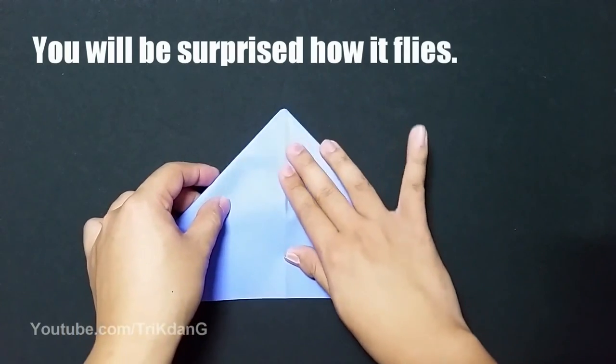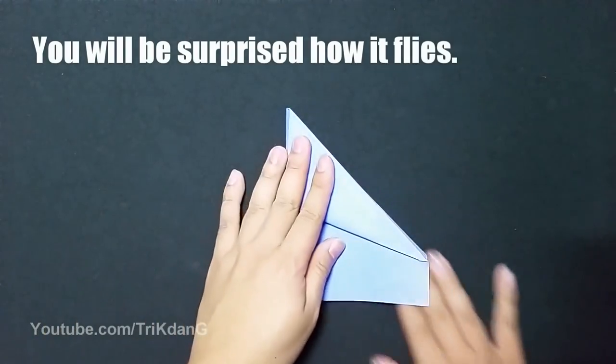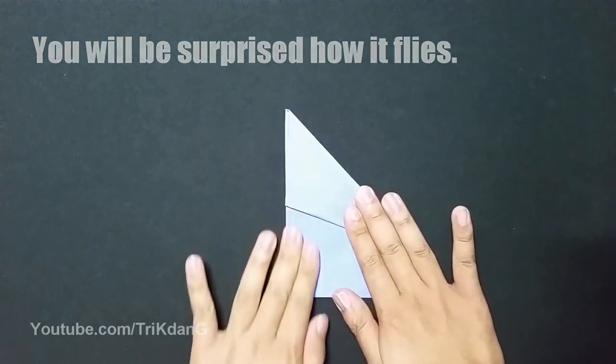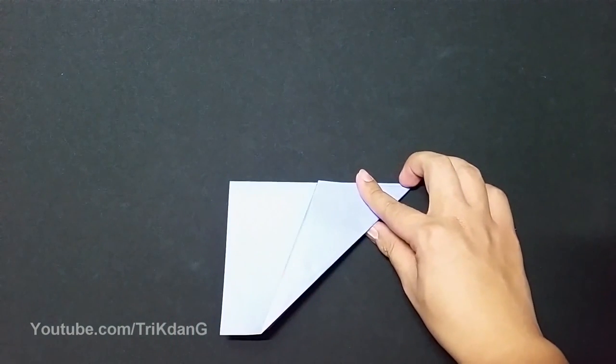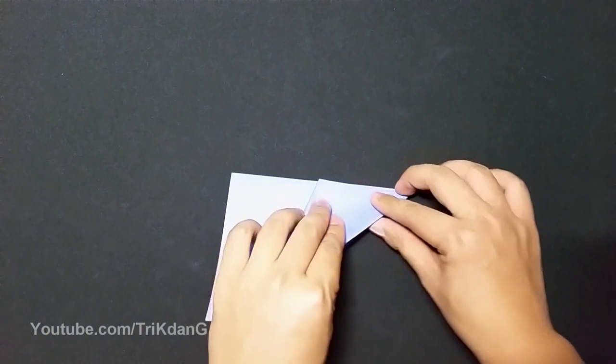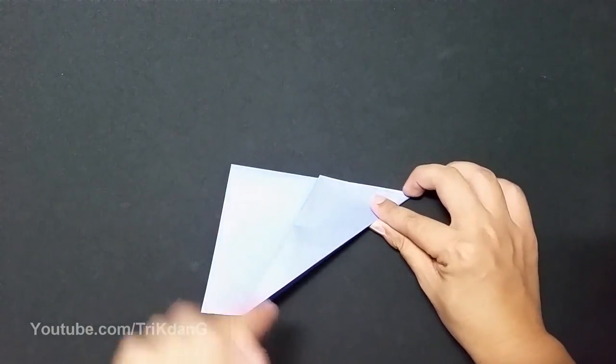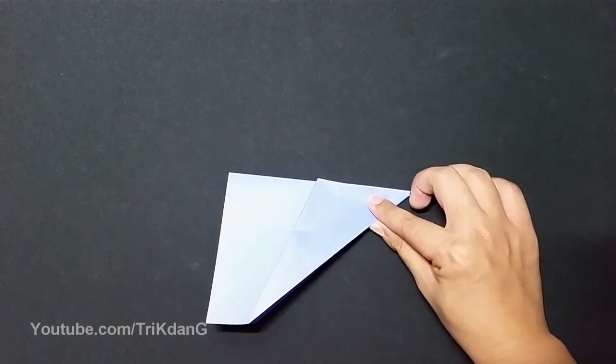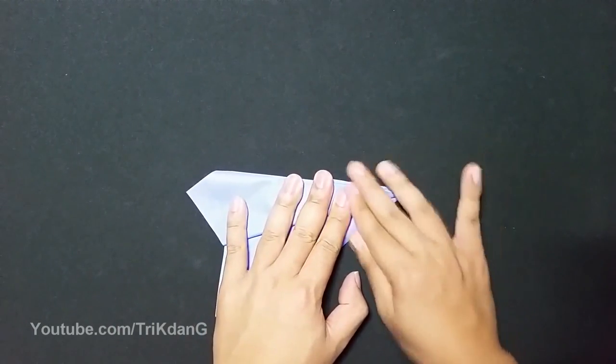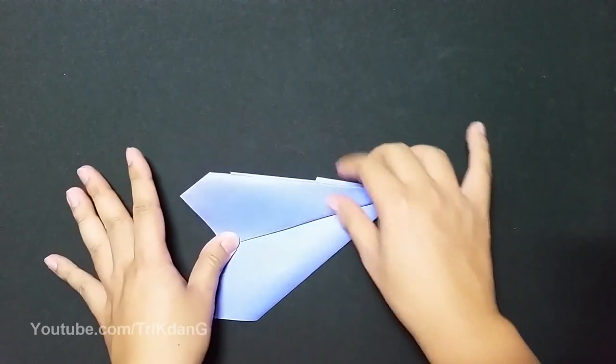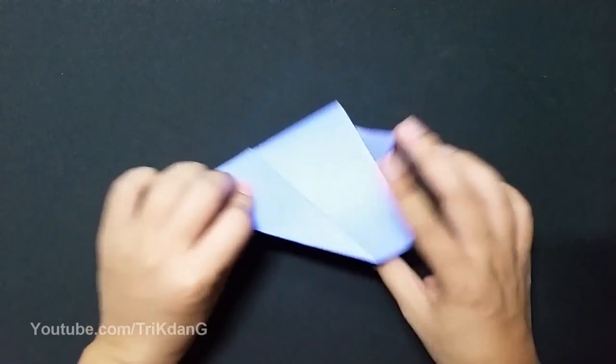Now I can turn the paper over and fold it in half. After you fold it in half, you will create the wings by folding this layer down. I will use this edge and this edge as my reference points to fold it down. And you repeat the same fold for the other side.